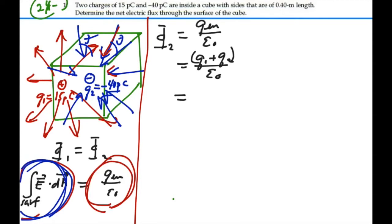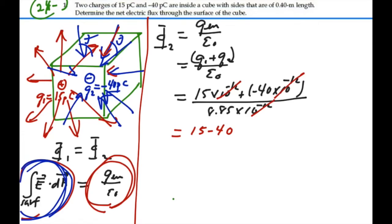And so we'll have 15 picocoulombs, 15 times 10 to the minus 12, plus minus 40 picocoulombs, minus 40 times 10 to the minus 12, over epsilon nought, which we know to be 8.85 times 10 to the minus 12. Well, multiply top and bottom of this fraction by 10 to the 12, so the 10 to the minus 12 is canceled out. And so this is going to be equal to 15 minus 40 over 8.85.